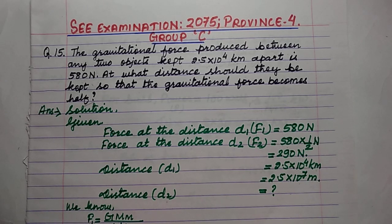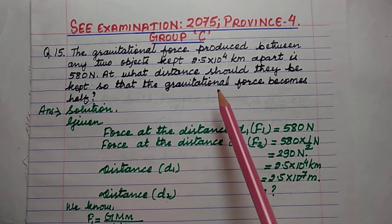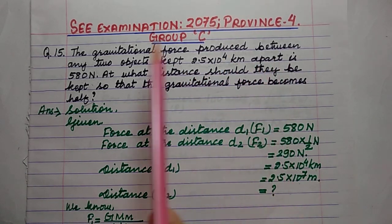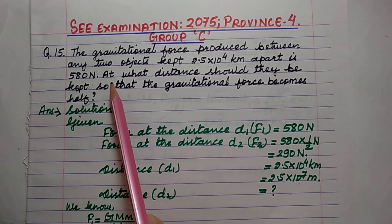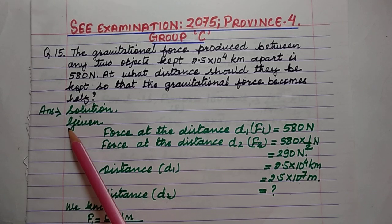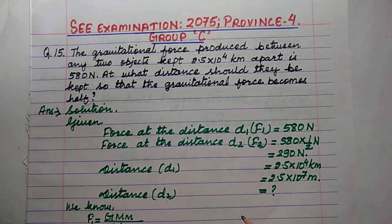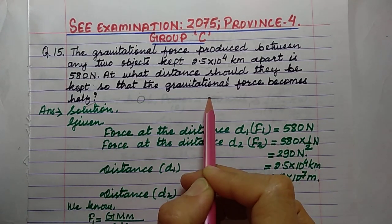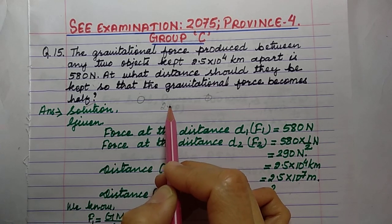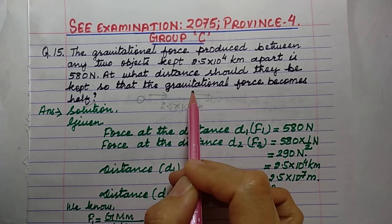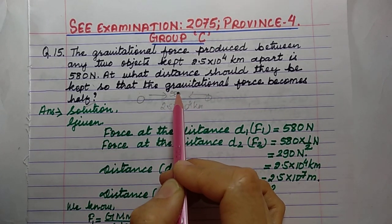Group A and B have been done in previous video. Question number 15: the gravitational force produced between any two objects kept 2.5 × 10⁴ kilometers apart is 580 Newton. At what distance should they be kept so that the gravitational force becomes half? There are two objects kept at 2.5 × 10⁴ kilometer distance, and the force between them is 580 Newton.